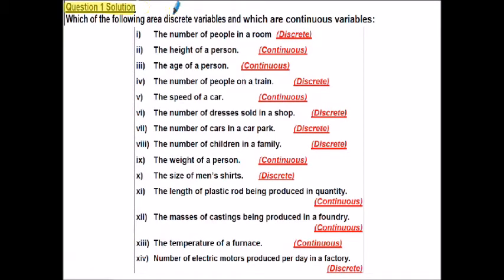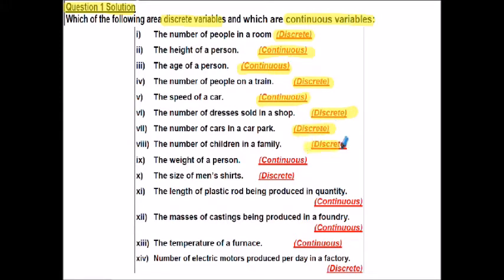Question one solution - the number of people in the room would be classified as discrete. The height of a person would be continuous. The age of a person, continuous. The number of people on a train, discrete. The speed of a car, continuous. The number of dresses sold in the shop, discrete. The cars in the car park, discrete. The number of children in the family, discrete. The weight of a person, continuous. Size of men's shirts, discrete. The length of plastic rod being produced in quantity, continuous. Masses of castings being produced in a foundry, continuous. Temperature of furnace, continuous. The number of electric motors produced per day in a factory, normally discrete.